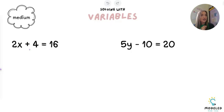The opposite of addition is subtraction, so I'm going to subtract 4 from both sides. My 4s cross each other out, so they're no longer on that side of the equal sign. Now I need to do 16 minus 4.